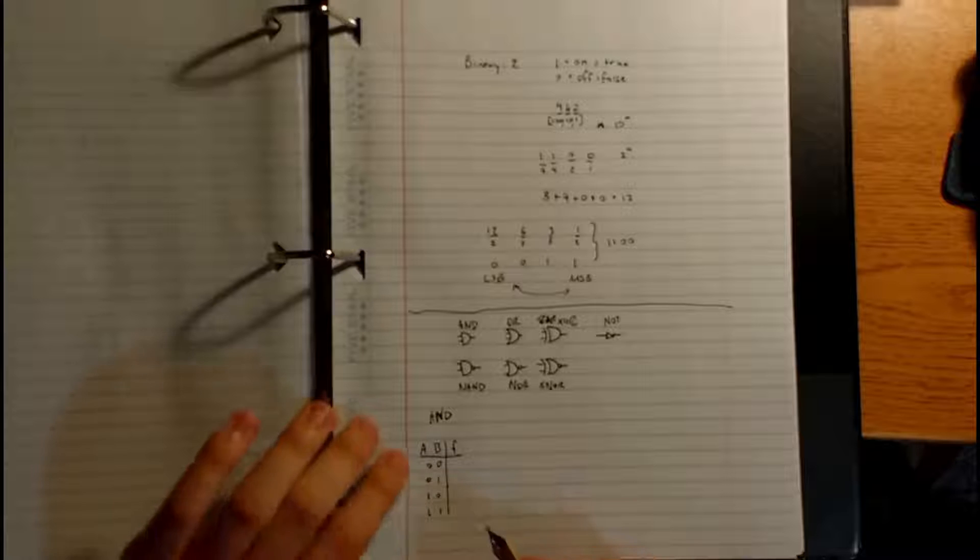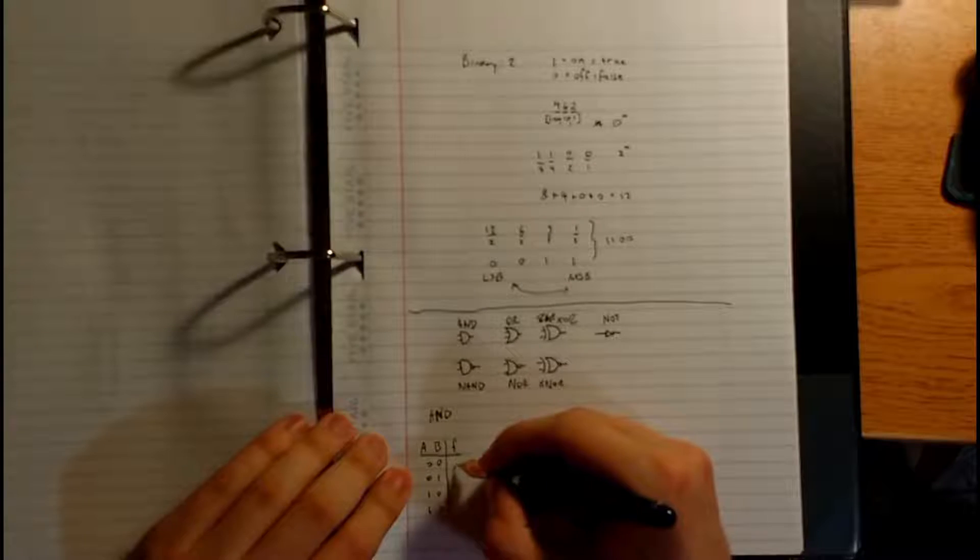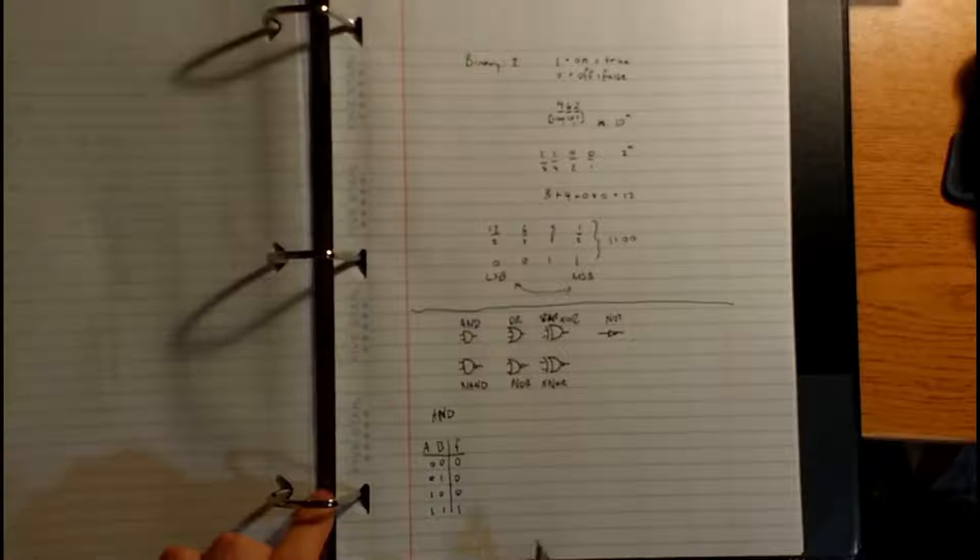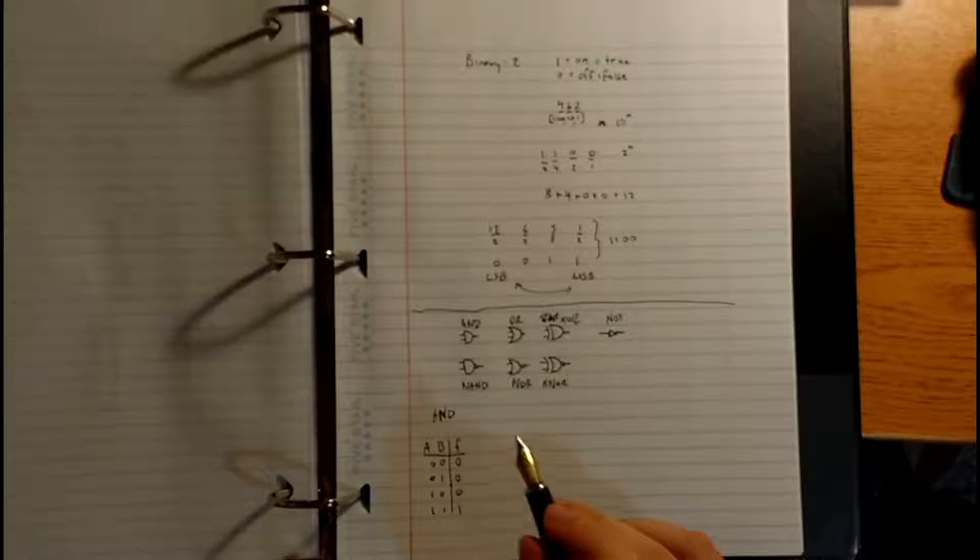And then F is our output. So an AND, remember, it only is on when A and B are both on at the same time. So these first three, there's a 0 in at least one of them. So these are all 0s. The only time when A and B are both true is down here, so we're going to get a 1. So it's just looking at what the inputs for each of the arguments are, and then determining based off of the logic of various gates that you might have in your circuit, what the output's going to be.